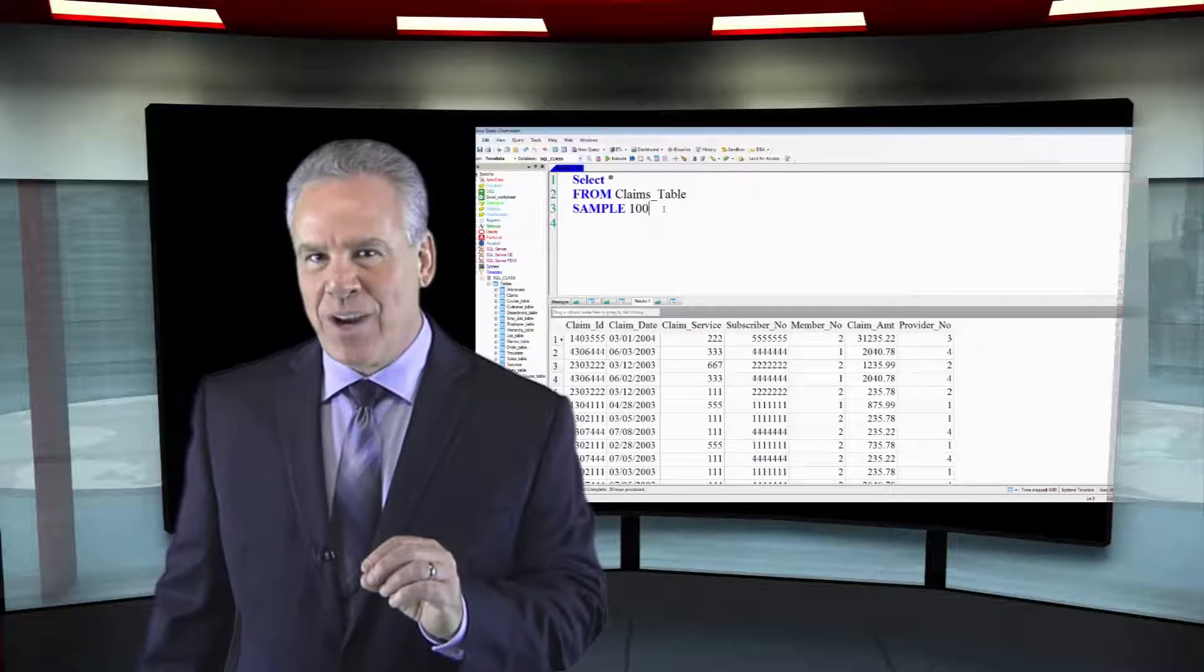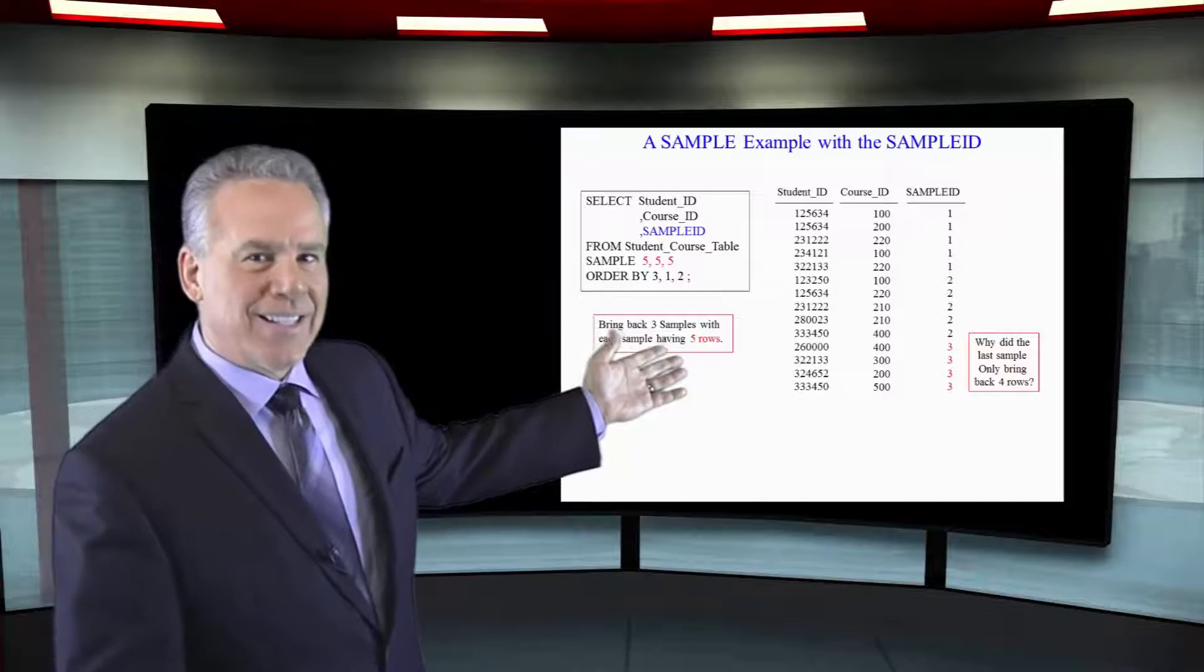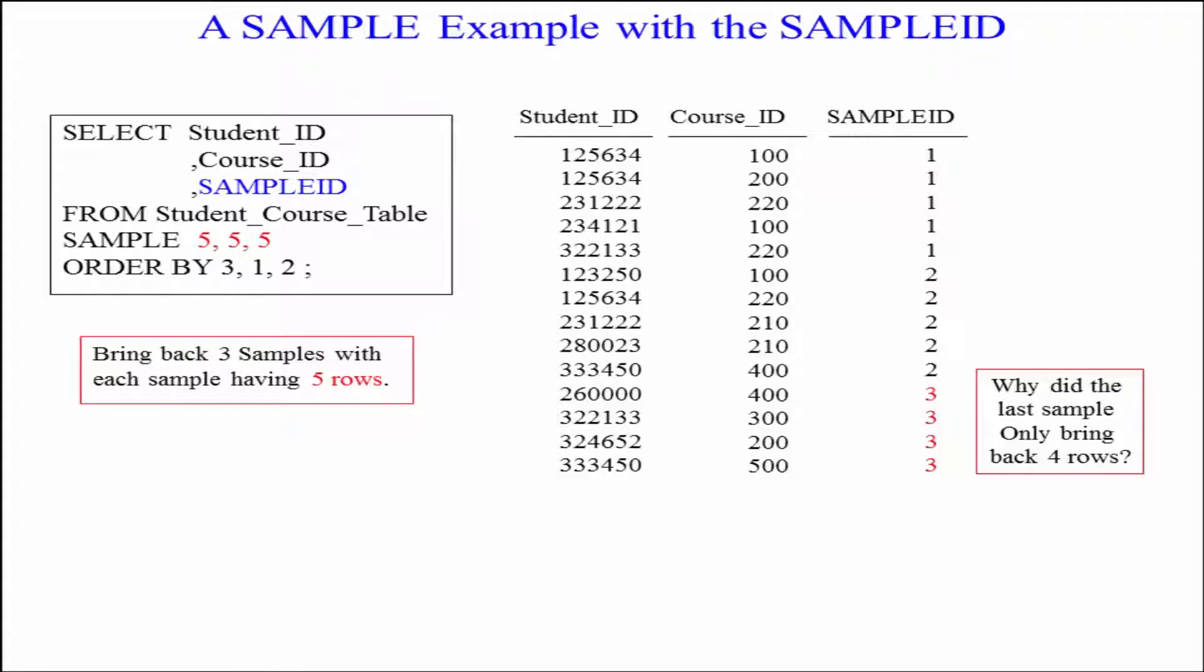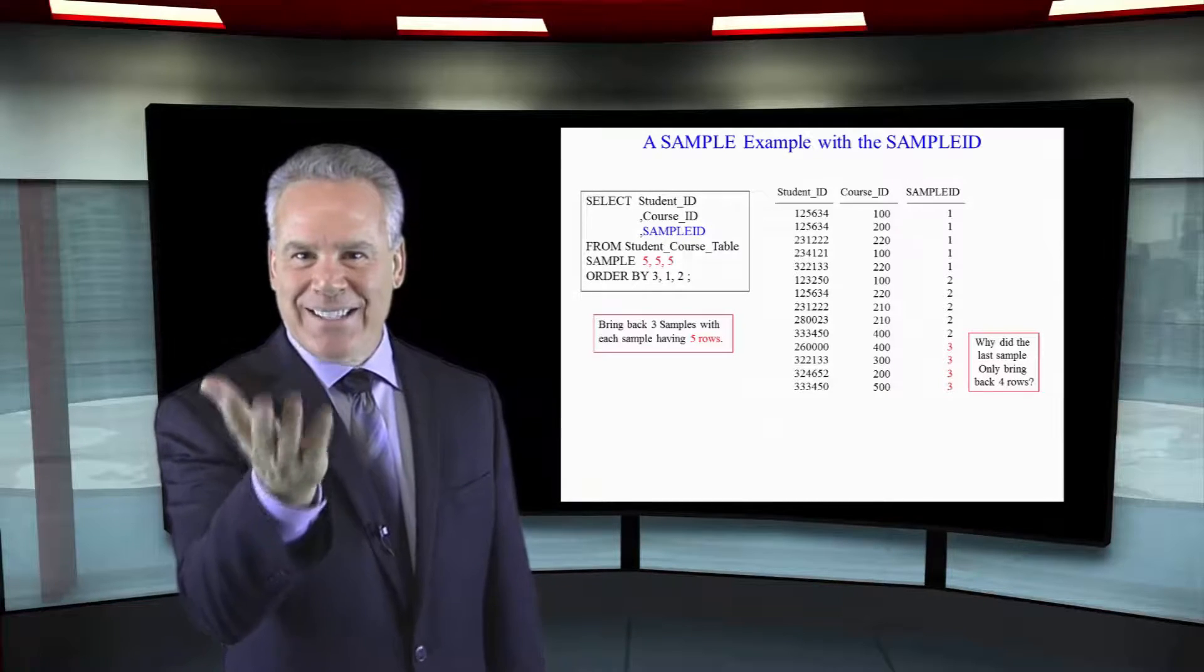Let's see that in action right here. We're going to select the student ID, the course ID, sample ID from the student course table sample five comma five comma five. Take a look at what happened. We're ordering by sample ID so we got five rows in sample one. We got five rows in sample two. We only got four rows in sample three because there's only fourteen rows in the table and that's the way sample works.